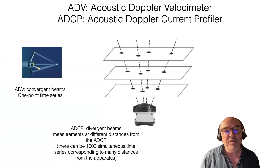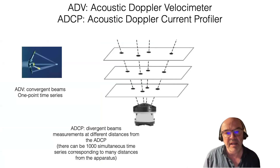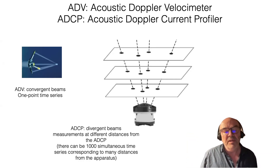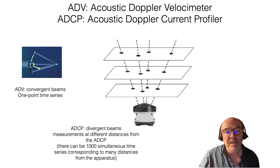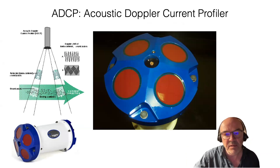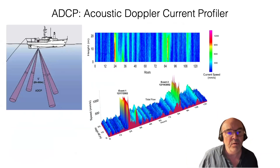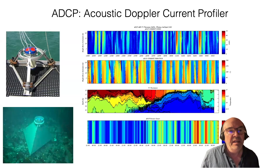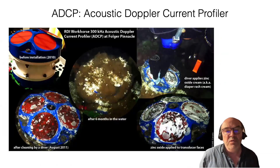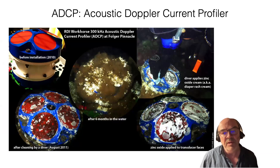Another system is the ADCP — Acoustic Doppler Current Profiler. The word 'profiler' means it produces a profile of velocities. The concept is similar to the ADV, but instead of convergent beams you have divergent beams, measuring across many planes — up to 1,000 different planes simultaneously. This gives 1,000 simultaneous time series corresponding to many distances from the instrument. It is quite expensive, typically 15,000 to 20,000 euros, and is very common in physical oceanography. It can be fixed to a boat to measure the water column, or fixed at the bottom, though it cannot be left in the sea too long due to the fouling problem.